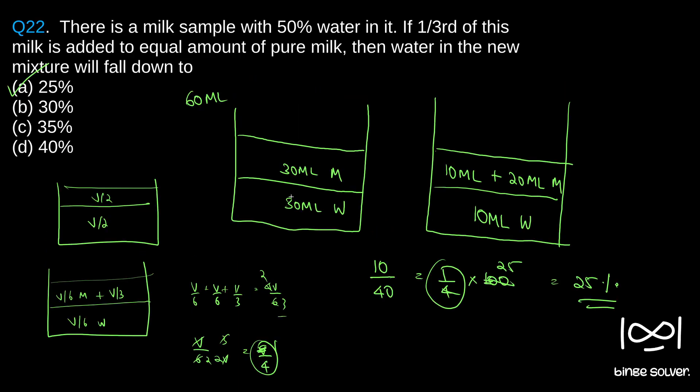So if you take simple absolute figures, then it will be more easier and we can come to the answer in a much faster way, I feel. Whichever way is comfortable to you, you can use. No problem. That is up to you. So solution to question 22 is a, 25%.